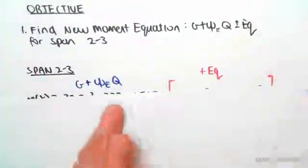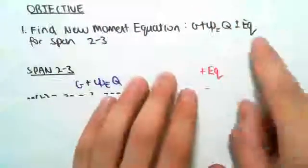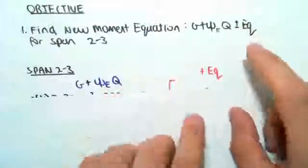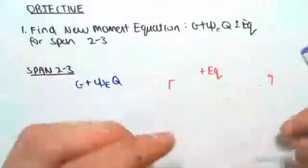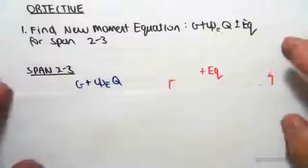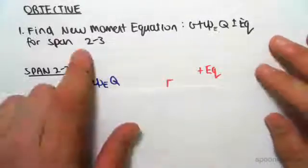Because as the torsion and the lateral force goes, it's going to swing back and forth, so we need to put plus and minus there. In this video I'm just going to be focusing on the plus just to show you what to do, and then you guys can continue with the minus, and I'm only doing for span 2 to 3.